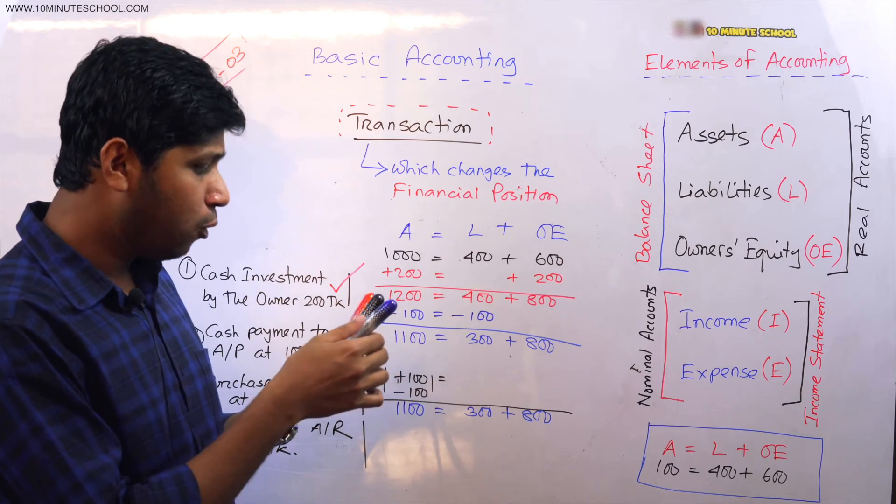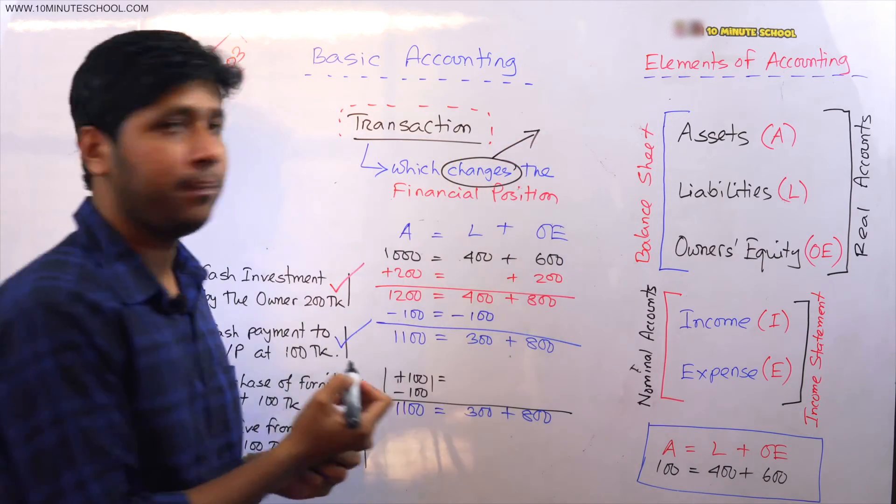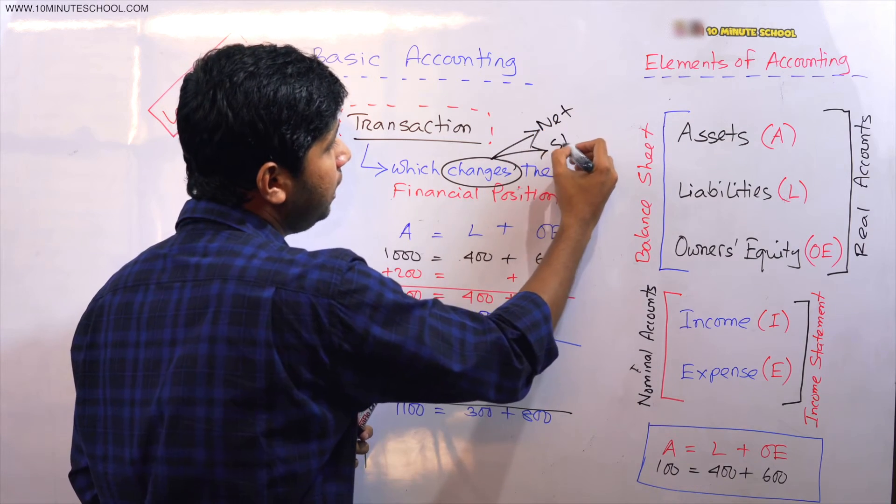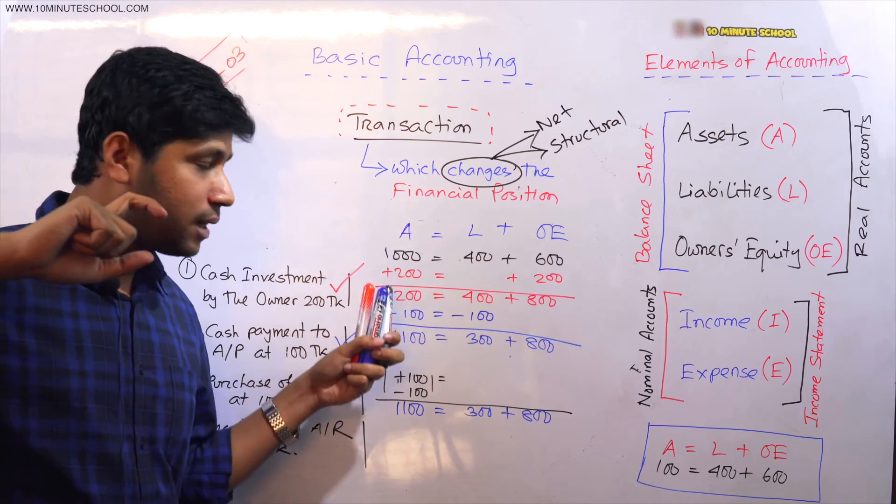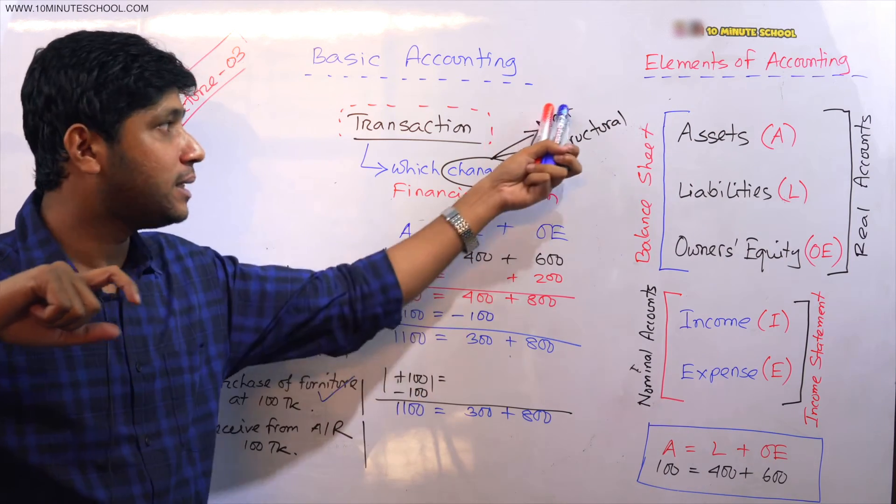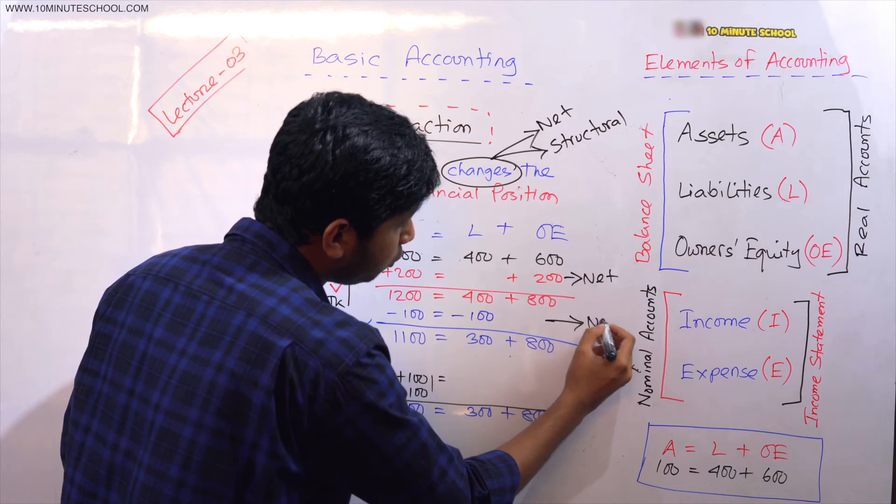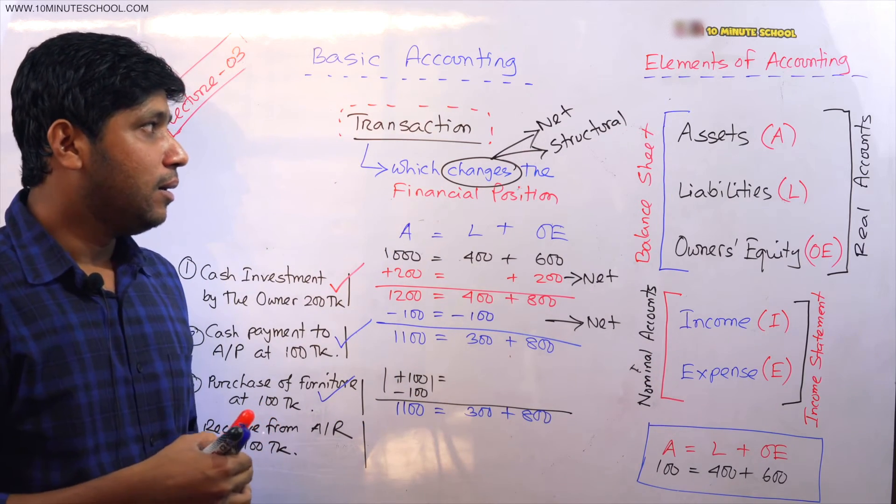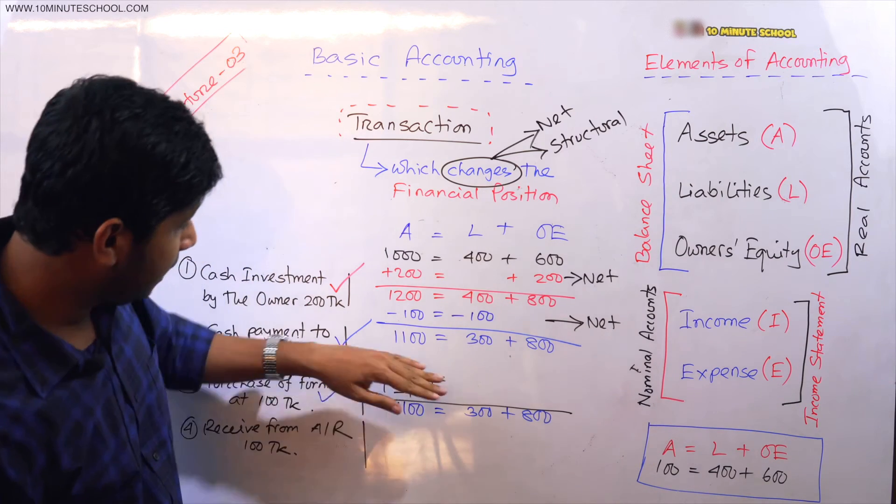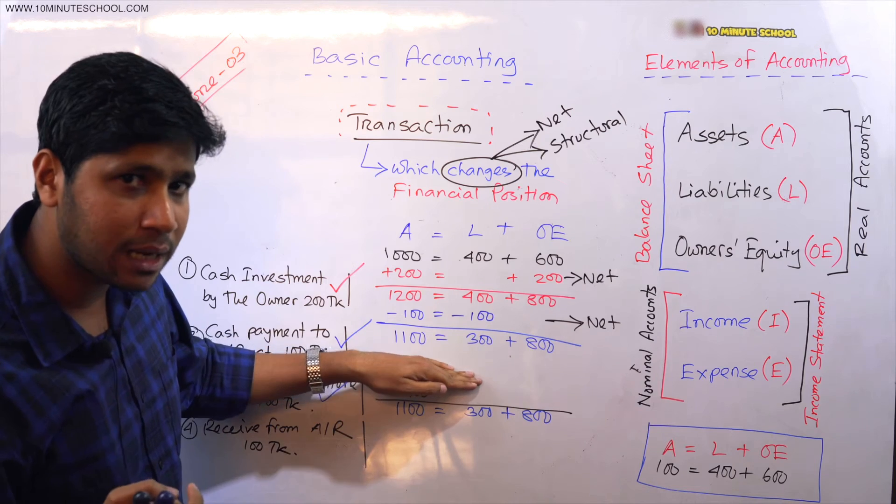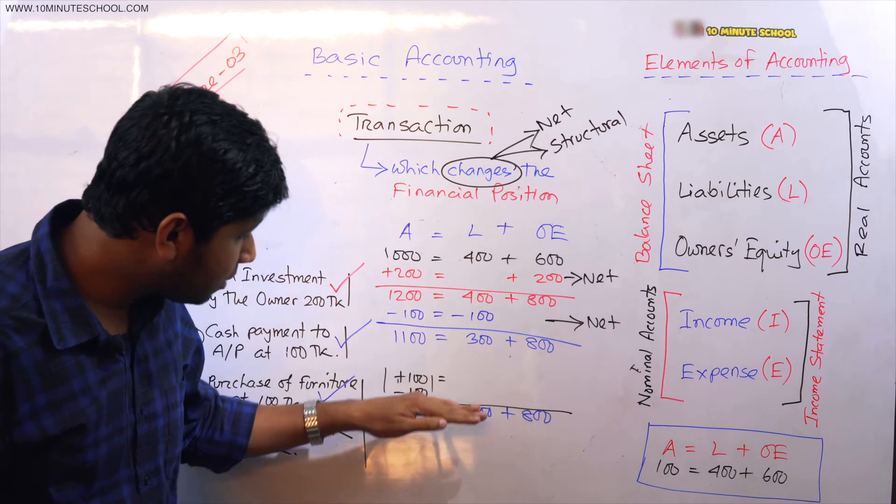I should clarify: a transaction changes the financial position, but the change can be of two types. One is net change - the balance changes, like from 1000 to 1200 to 1100. This is a change in our financial position. The other is structural change - the amount changes but the balance stays the same. The furniture transaction had a value of 100 taka - our total assets are the same but cash decreased and furniture increased, so the structure changed.